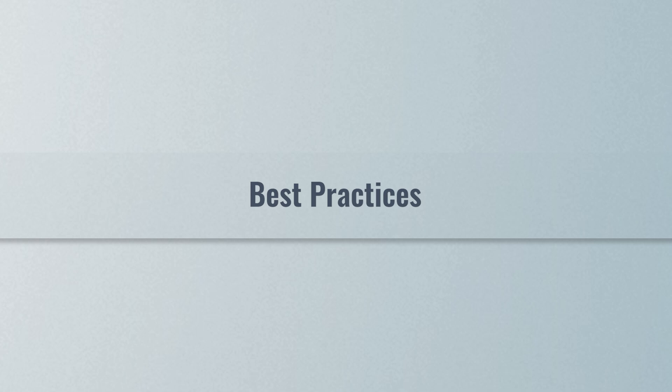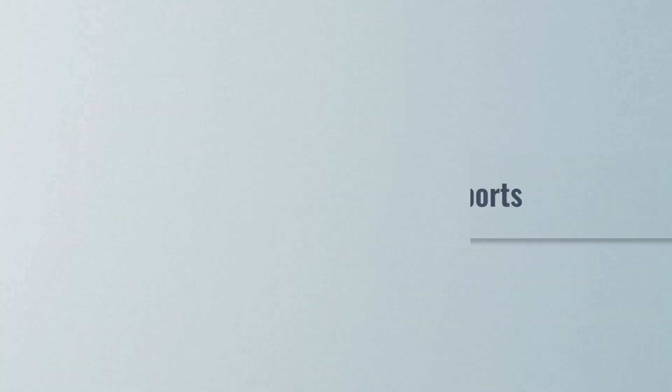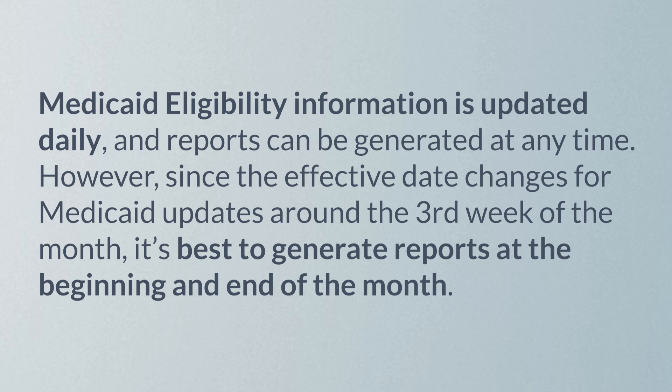Follow these best practices when using the Medicaid eligibility reports. First, regarding when to generate both reports: Medicaid eligibility information is updated daily and reports can be generated at any time. However, since the effective date changes for Medicaid updates around the third week of the month, it's best to generate reports at the beginning and end of the month.